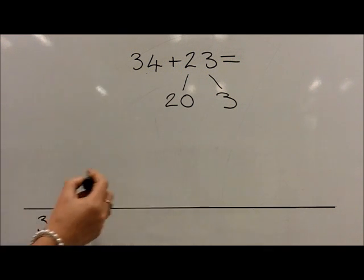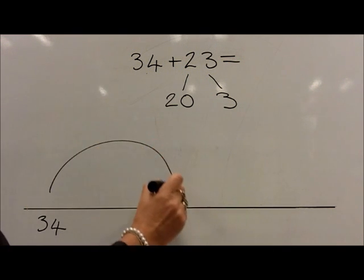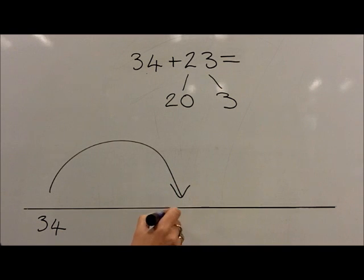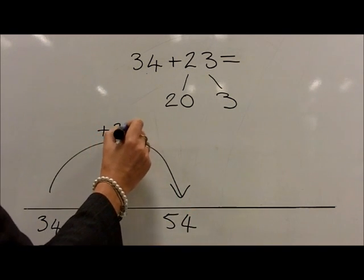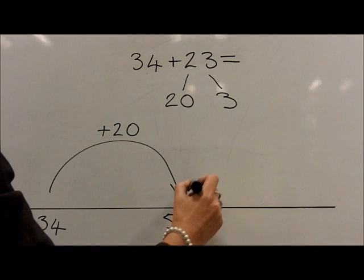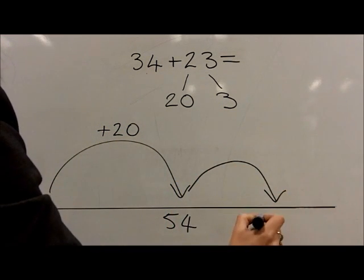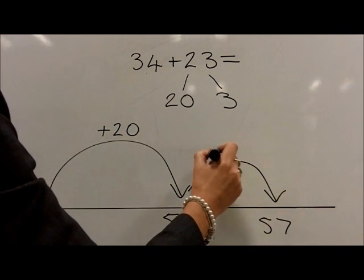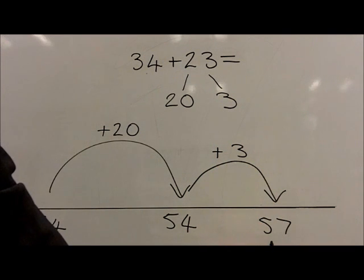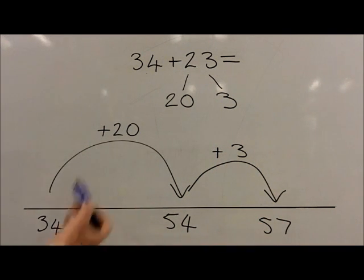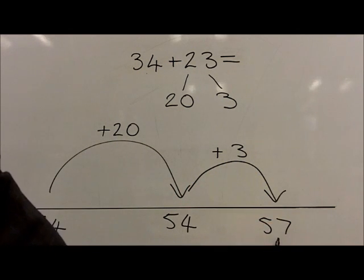Then add 20 in one jump to reach 54. Then adding 3 in one jump to reach 57. So 34 plus 23 gives us 57.